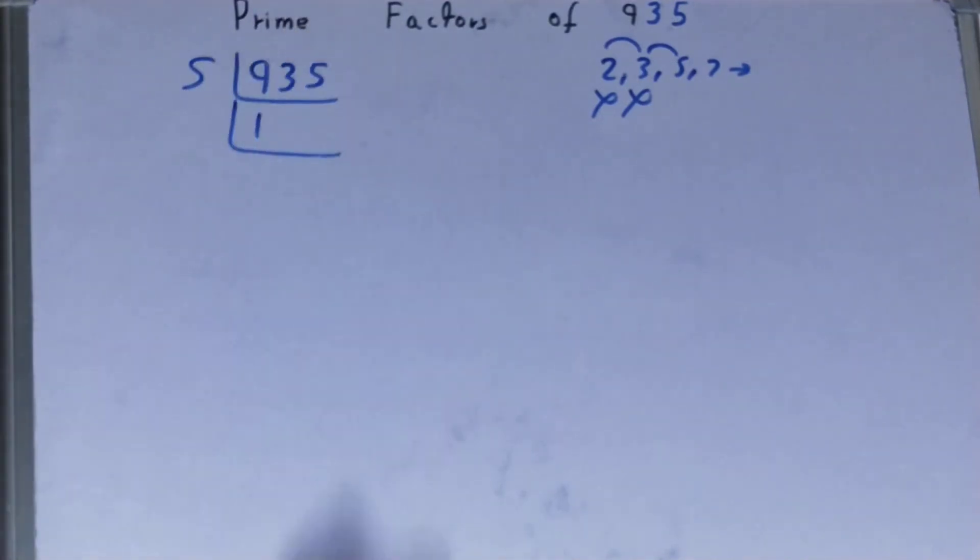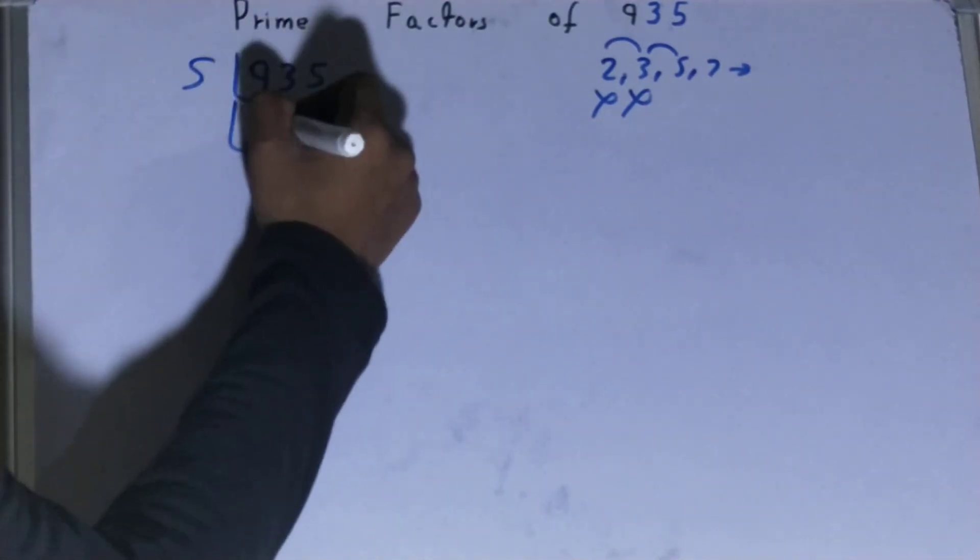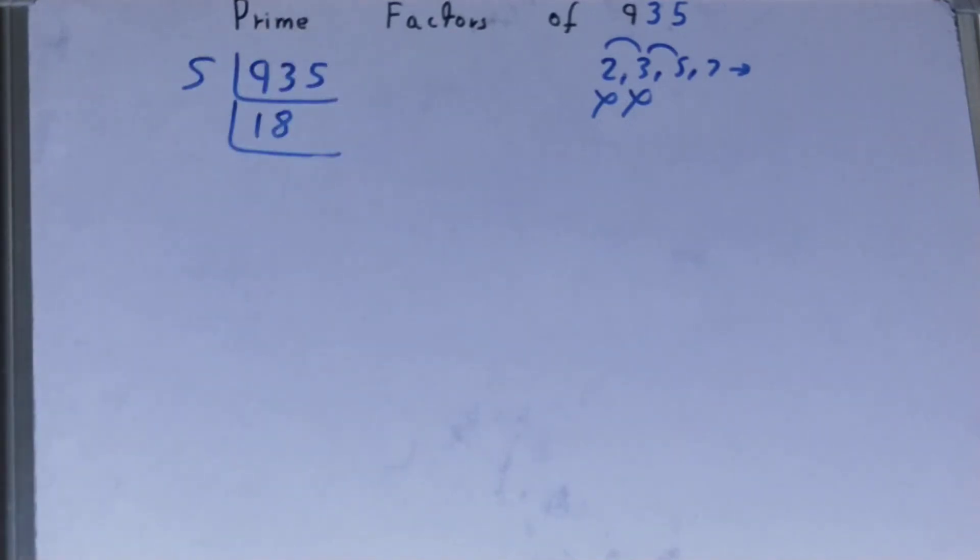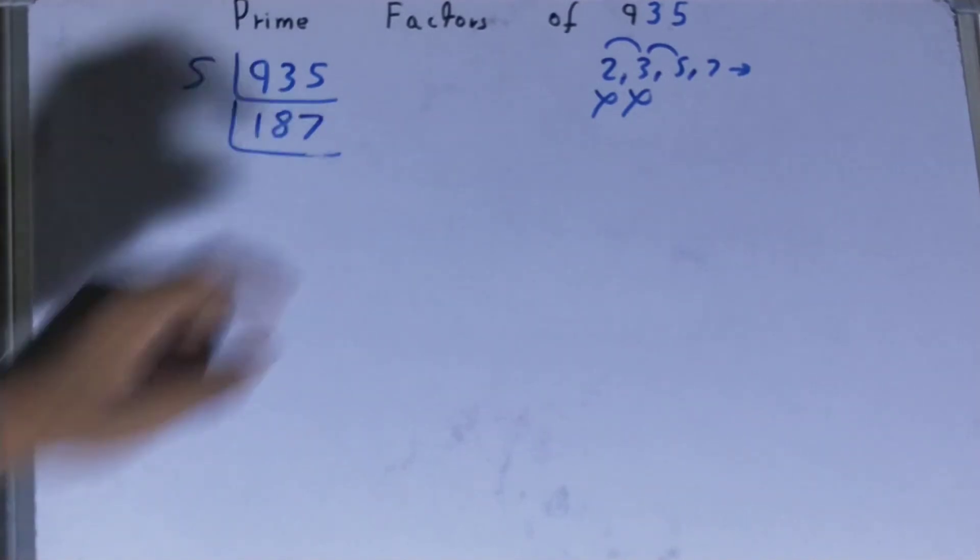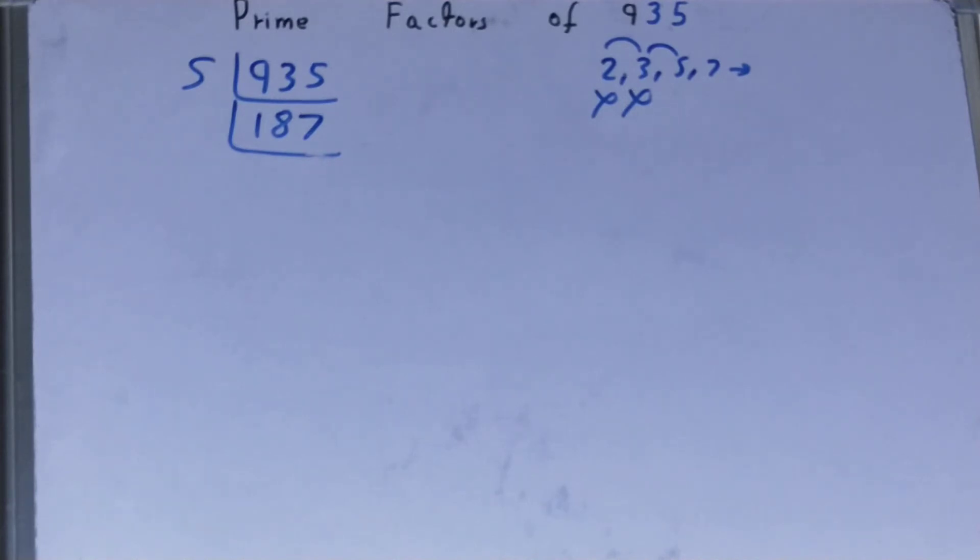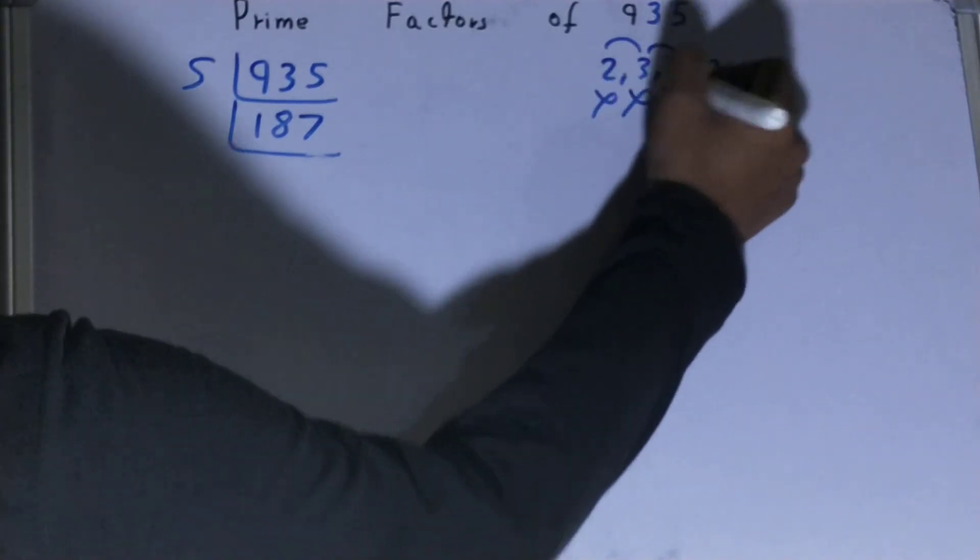5 times 1 is 5, 4, 3, 5. It's 43. 5 times 7, so you will be left with 187. Now, is this 187 divisible by 5? The answer is no, because the last digit is neither 5 nor 0.